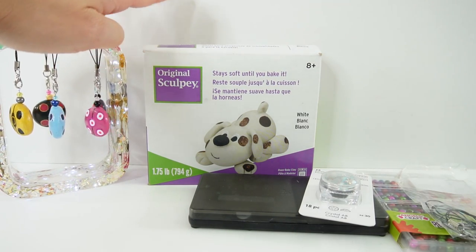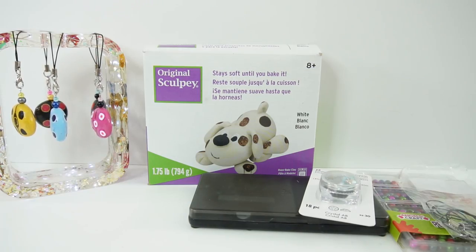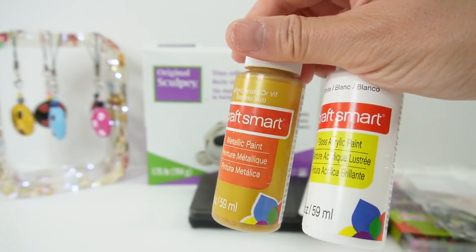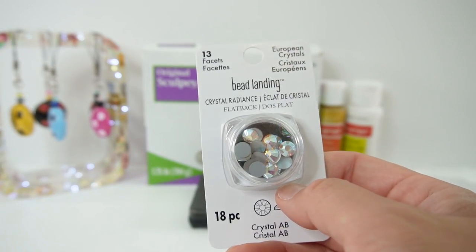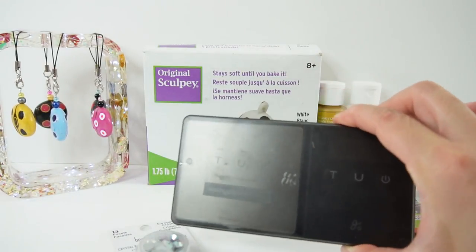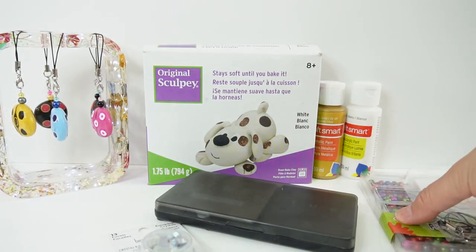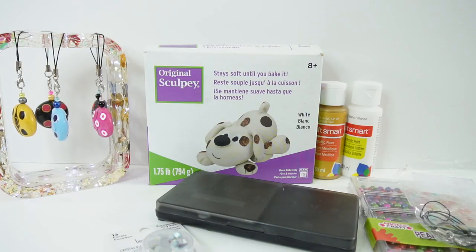We're going to need some oven baked clay. I have the original Sculpey in white. We're going to need some acrylic paint in gold and white. We're going to need some crystals. I got these with 13 facets, so they're a little bit bigger. We'll need a scale to measure out the clay and some beads and cable ties. All right, let's go ahead and get started.